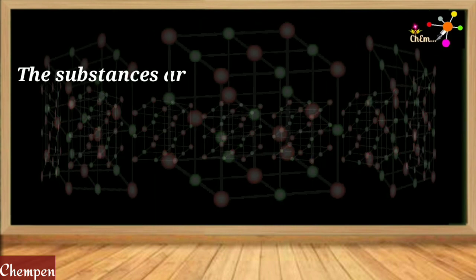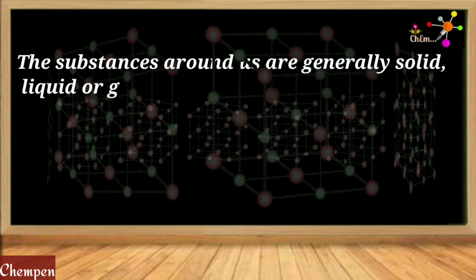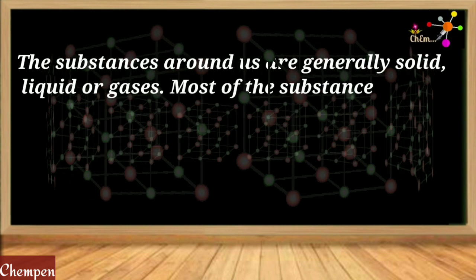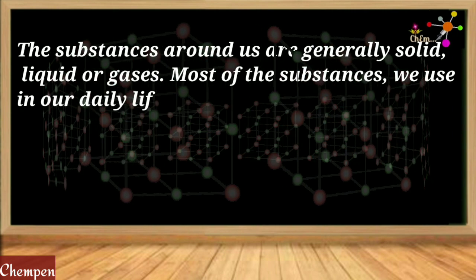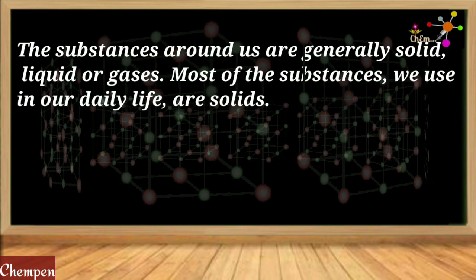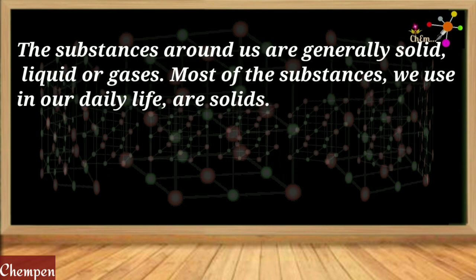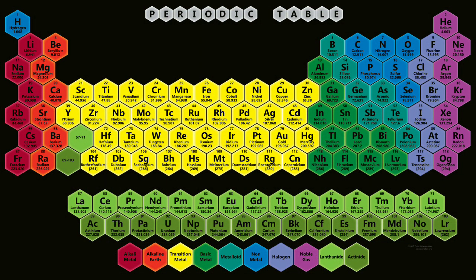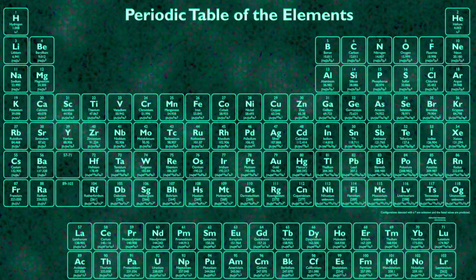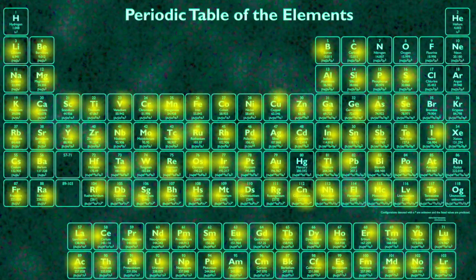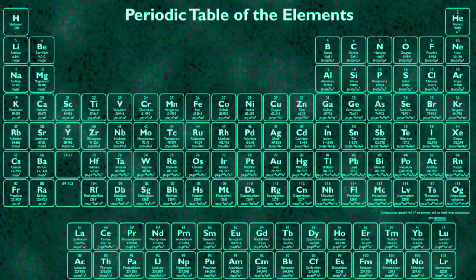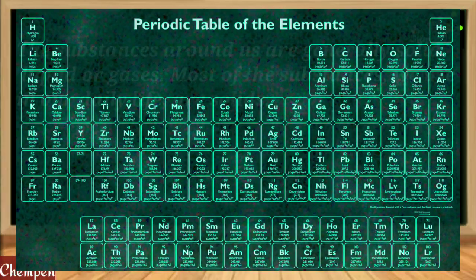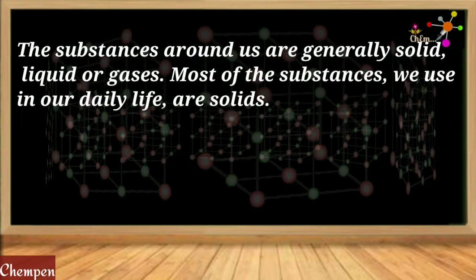In our surroundings we generally find substances in solid, liquid or gaseous phase. Most of the substances we use in our daily life are found to be solids. Even in the periodic table, among the various elements, most of the elements exist in solid state. These yellow dots correspond to those elements which are solids. Very few elements exist in either liquid or gaseous state.